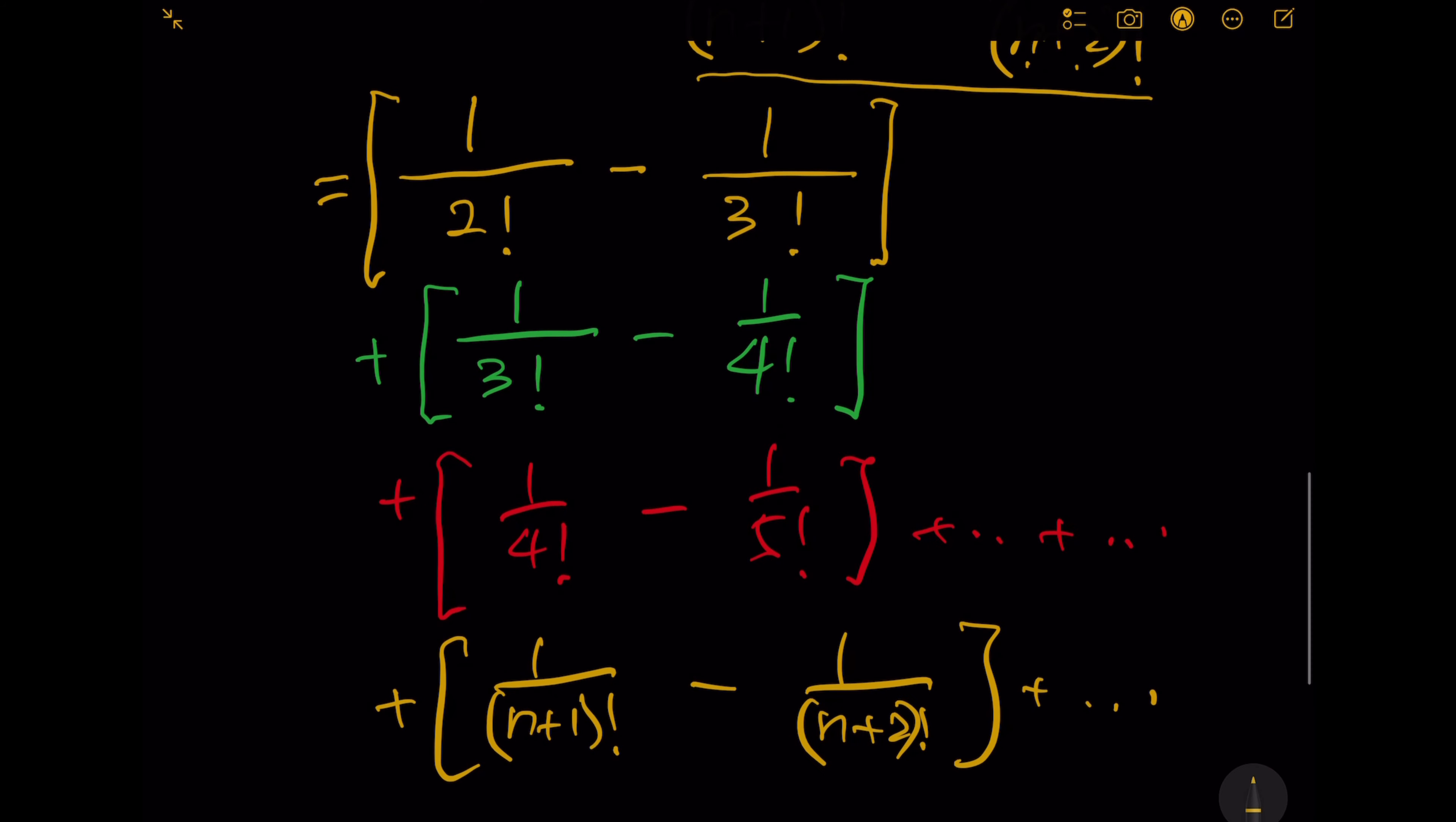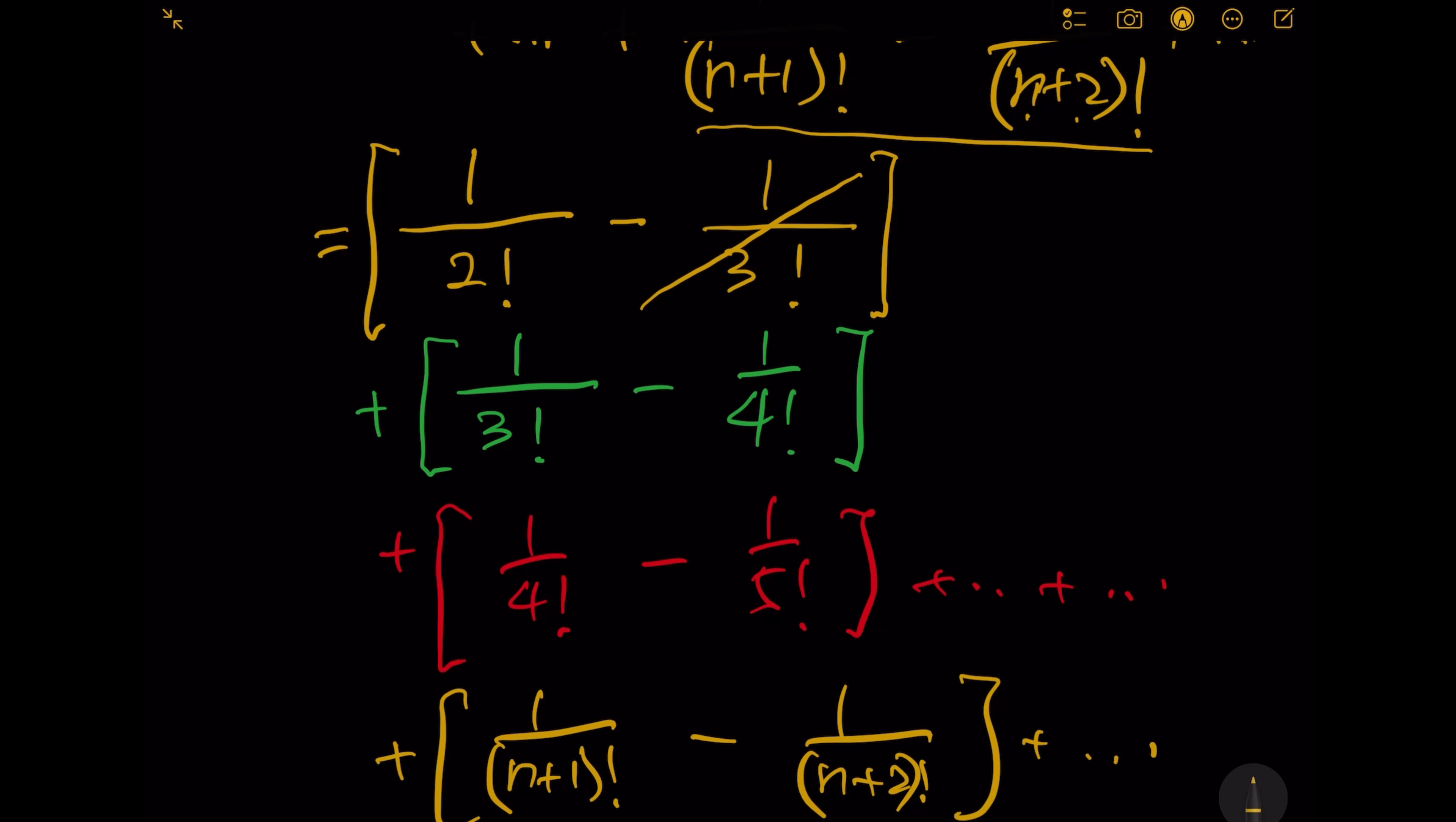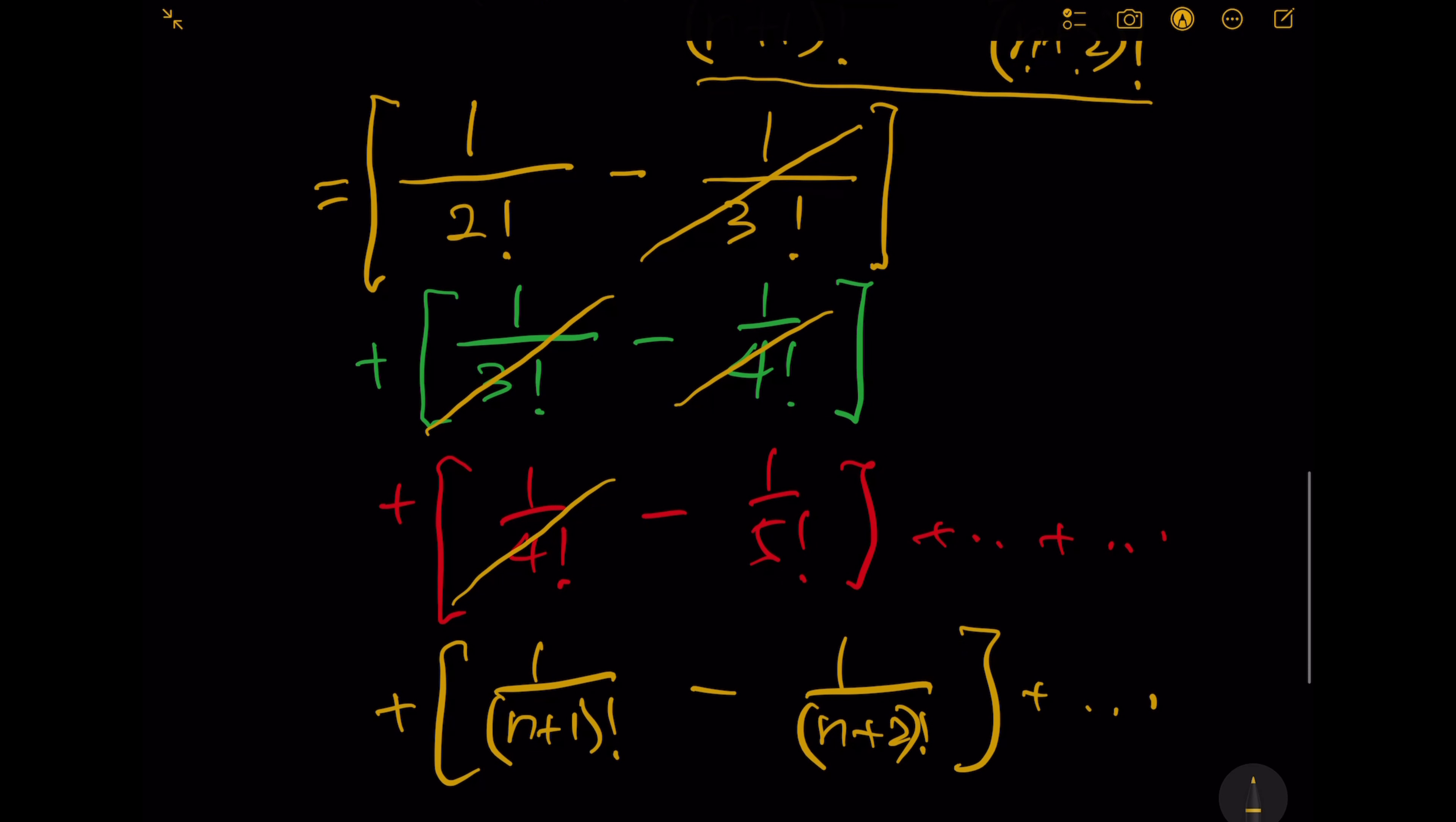So there is a nice pattern. The negative 1 over 3 factorial cancels together with the positive 1 over 3 factorial in the following terms. Same, the negative 1 over 4 factorial cancels with the positive 1 over 4 factorial, and the same pattern is repeating. Finally, we have only two terms left: the first term and the last term.